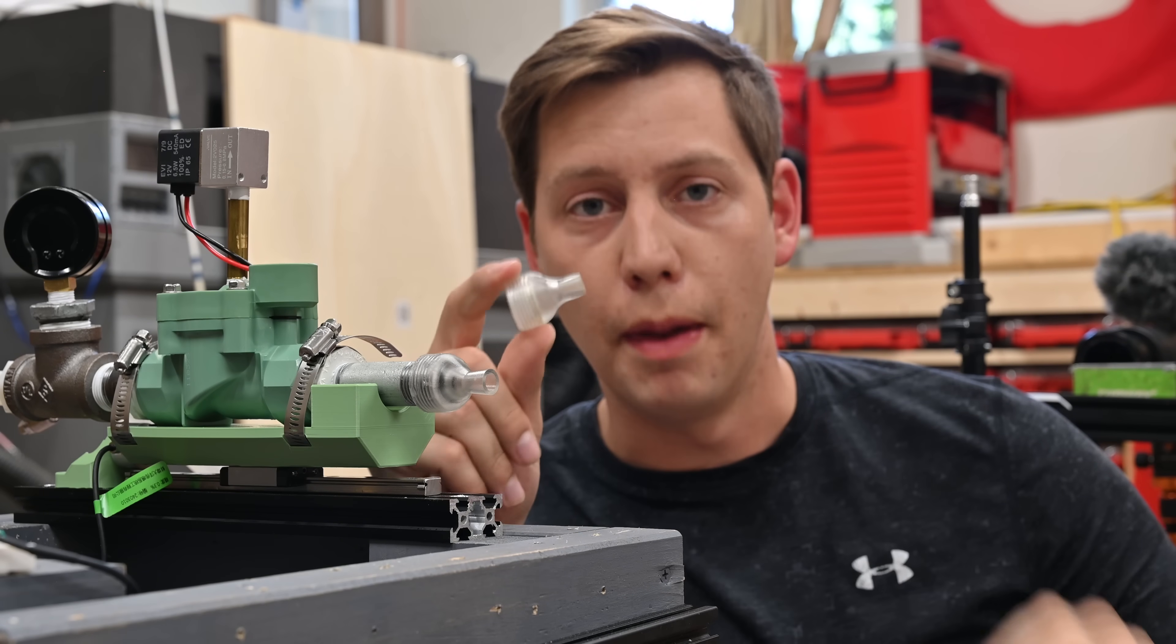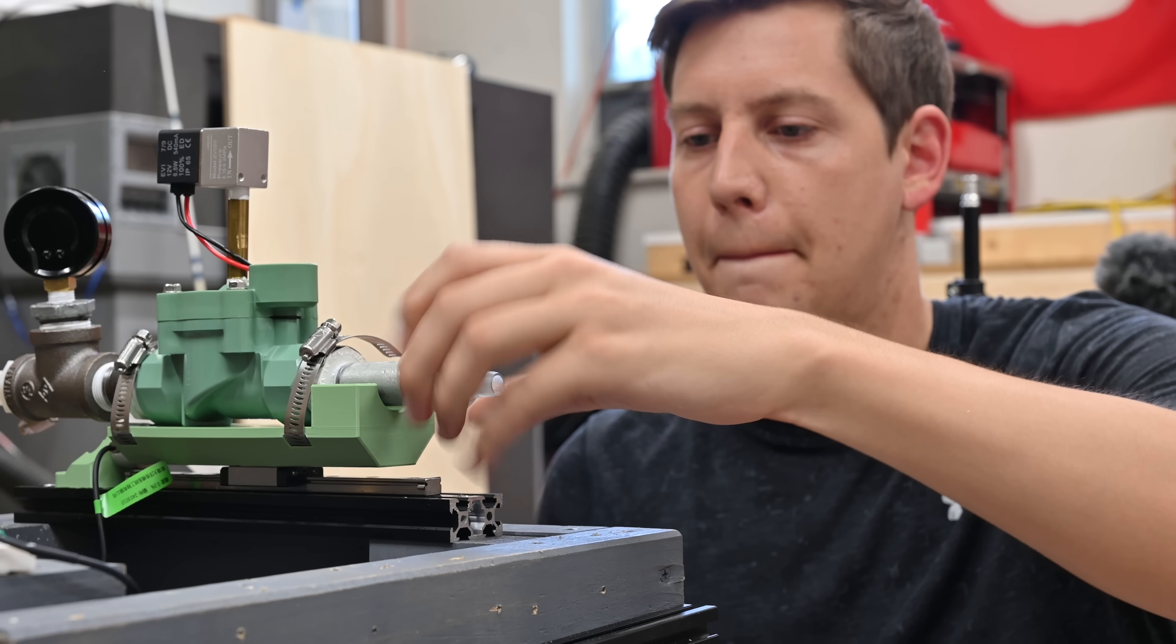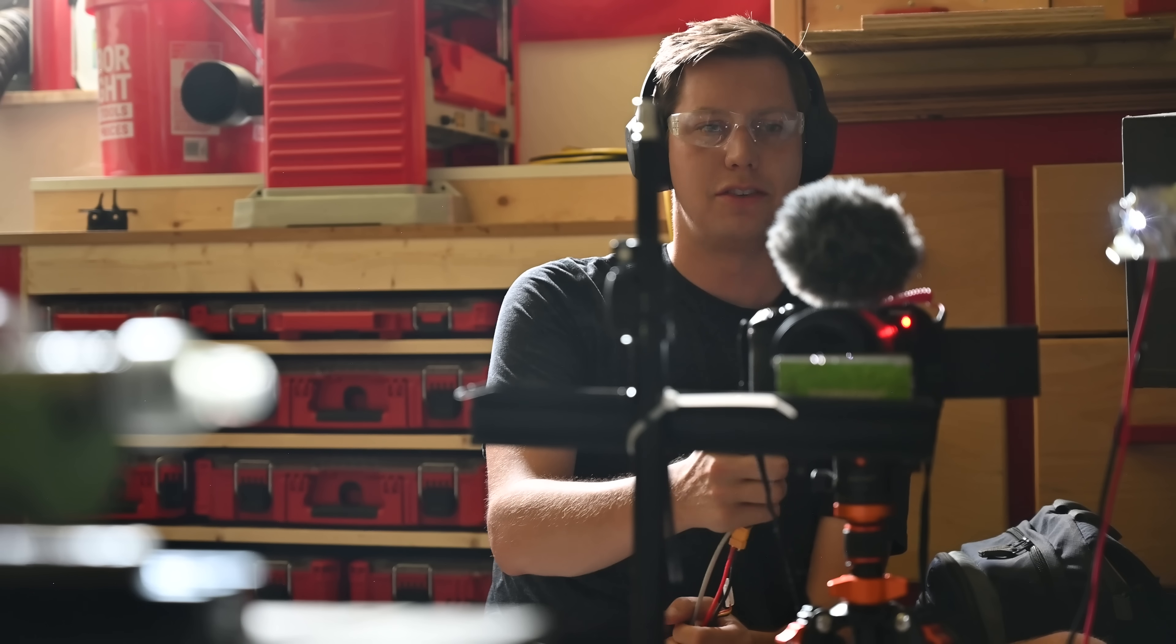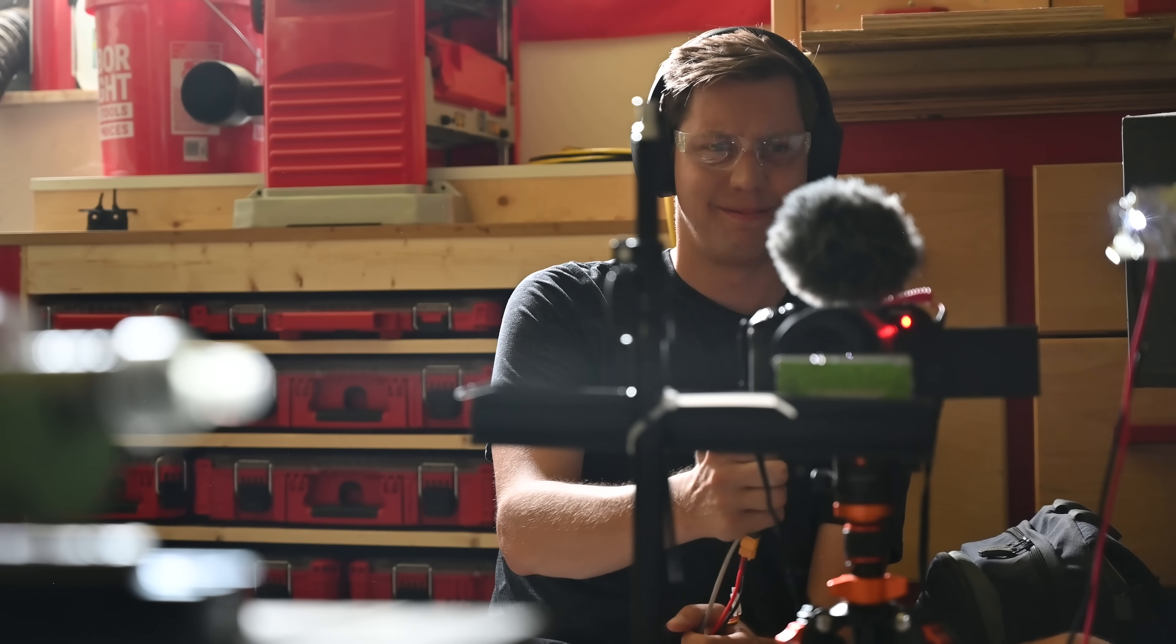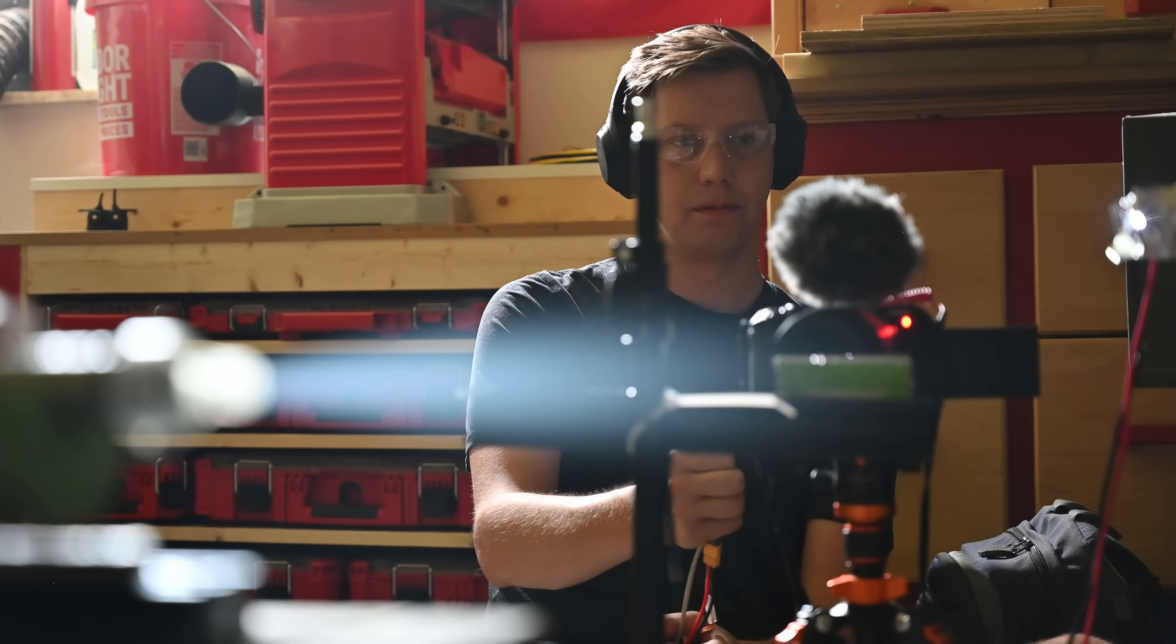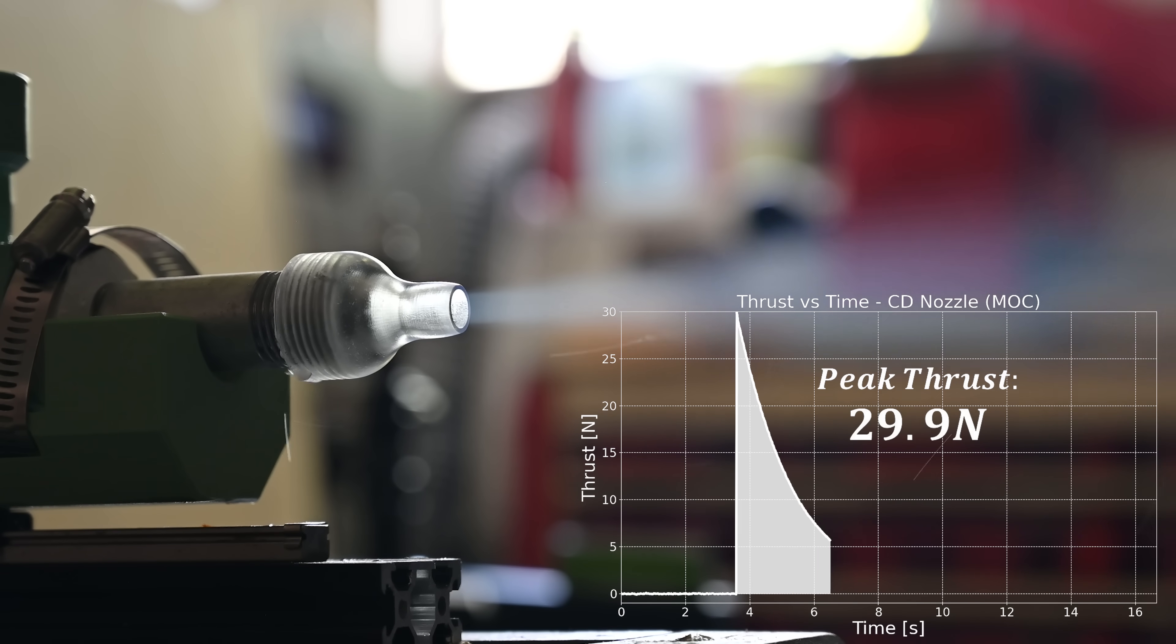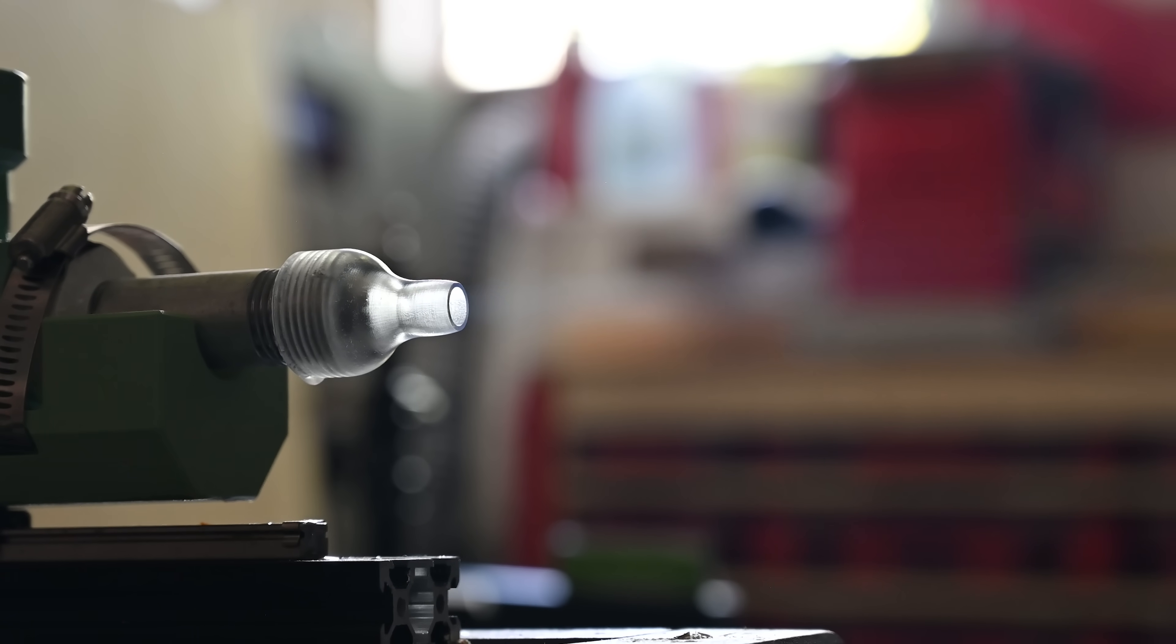All right, next up is this, which is a bell nozzle designed with method of characteristics. Bell nozzle. Three, two, one. This nozzle made a peak thrust of 29.9 Newtons, which is 7% more than the converging-only nozzle. So clearly, this bell nozzle design is the best way to go.